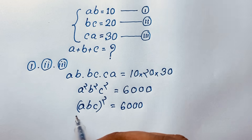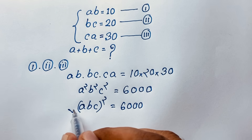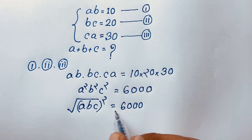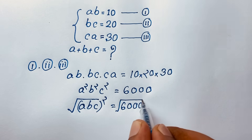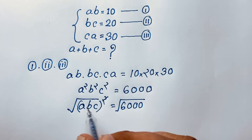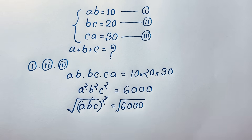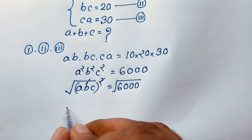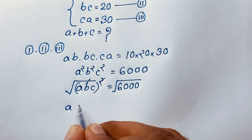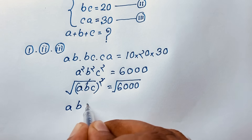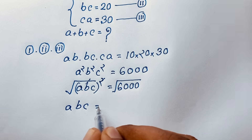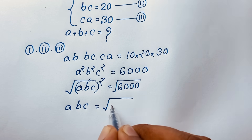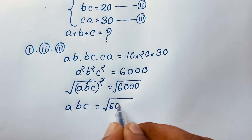Now I use square root on both sides. The square root cancels the square, so we find that ABC is equal to the square root of 6,000.